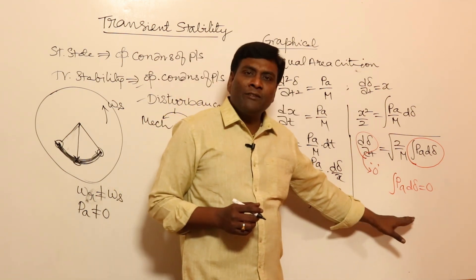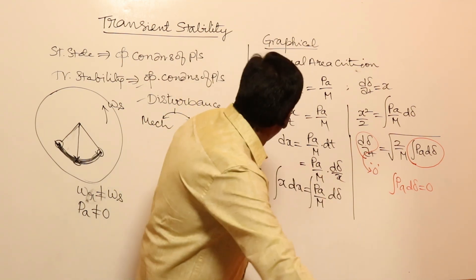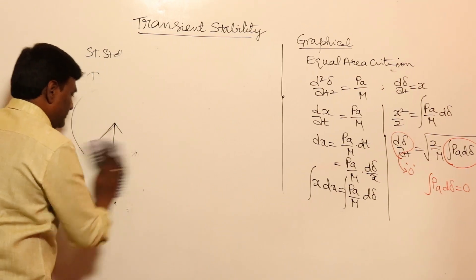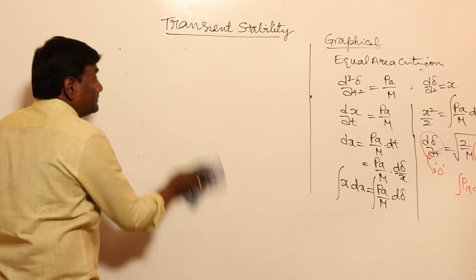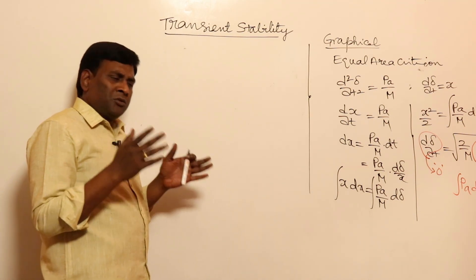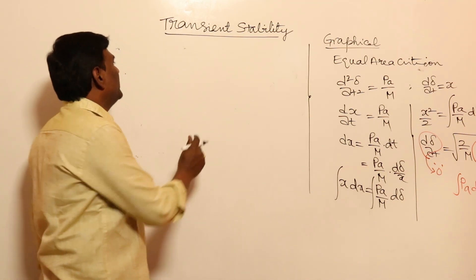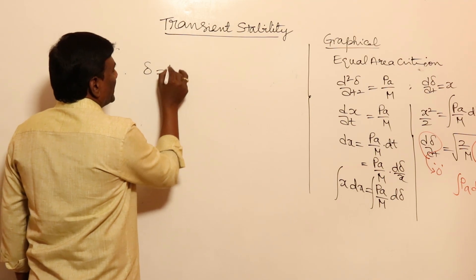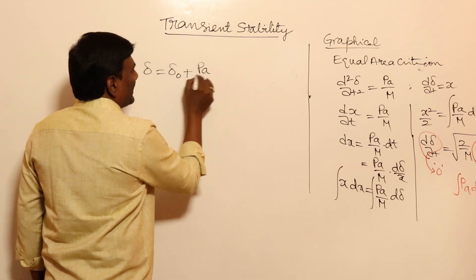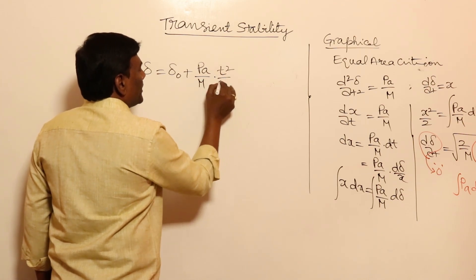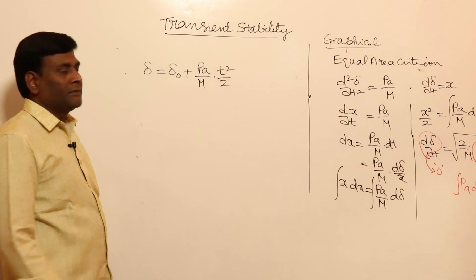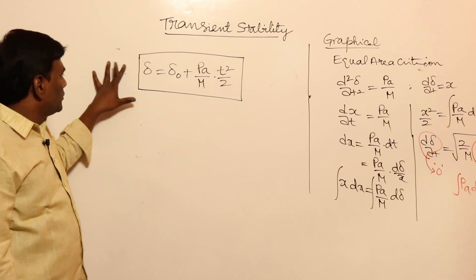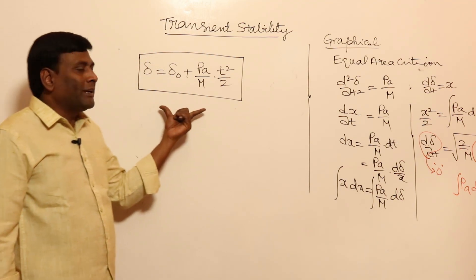The graphical method gives the equal area criterion, and the other method is numerical methods such as the Runge-Kutta method, Euler's method, or the point-by-point method. By the numerical method, directly we can use: delta = delta_0 + (PA/M)·(t²/2). Try to remember this — by numerical methods, specifically the point-by-point method, we are going to get this.